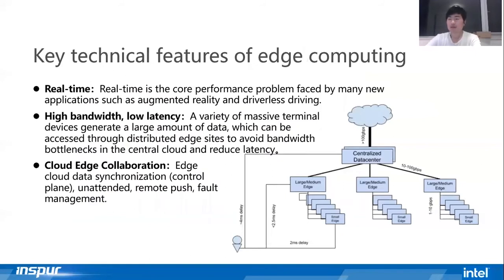Here, we summarize the three key technical features unique to edge computing. First, real-time. Real-time is a core performance requirement faced by many new applications such as augmented reality and autonomous driving. It is also the core problem to be solved by edge computing. The second is high bandwidth and low latency.